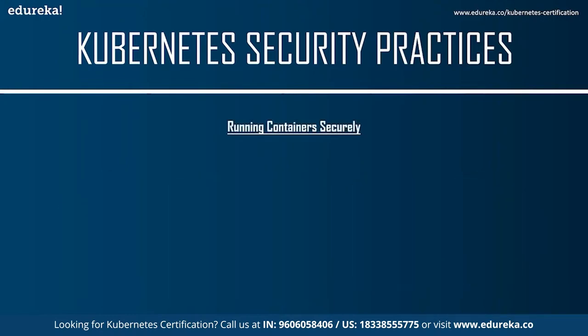Now let's talk about running containers securely. The first thing — say no to root. There's little need to run containers as root. Exceptions include: your container needs to modify the host system configuration, needs to bind to privileged ports on the node, or is installing software requiring root at runtime. If your container doesn't fall into these categories, the principle of least privilege says to run it as a non-root user — you can do this by including a USER command in the Dockerfile.